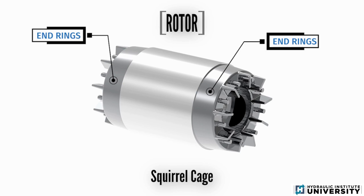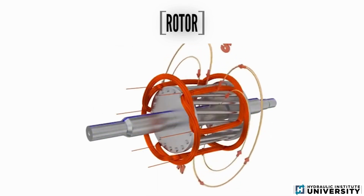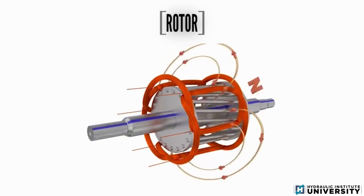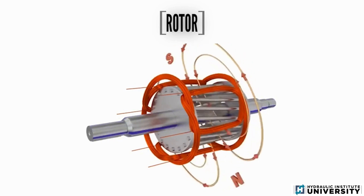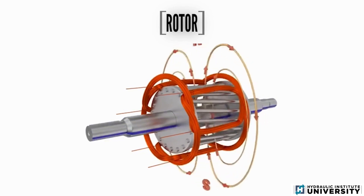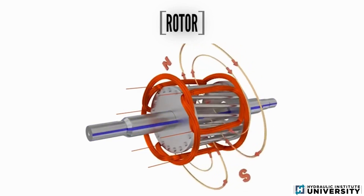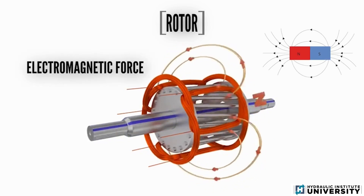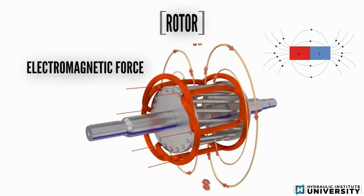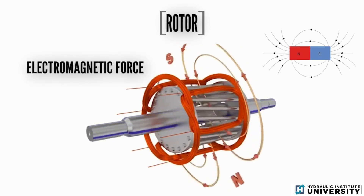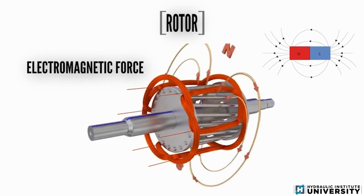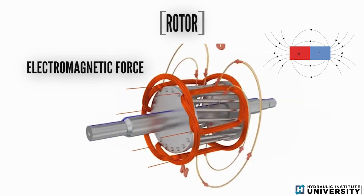The stator's rotating magnetic field induces an electromotive force (EMF) on the squirrel cage rotor bars. The EMF then produces current in the rotor bars, giving a current-carrying loop situated within the rotating magnetic field. An electromagnetic force will finally be produced on the current-carrying rotor bars, and the rotor will start to rotate.